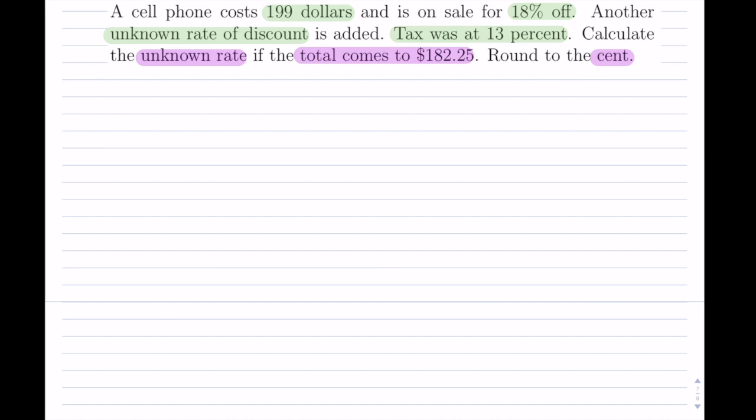When I work with these types of questions, I always provide the given in terms of a tree. In this particular tree, I always start with the regular price. Imagine there was no discounts, there was no taxes, and so the cost would have been $199.